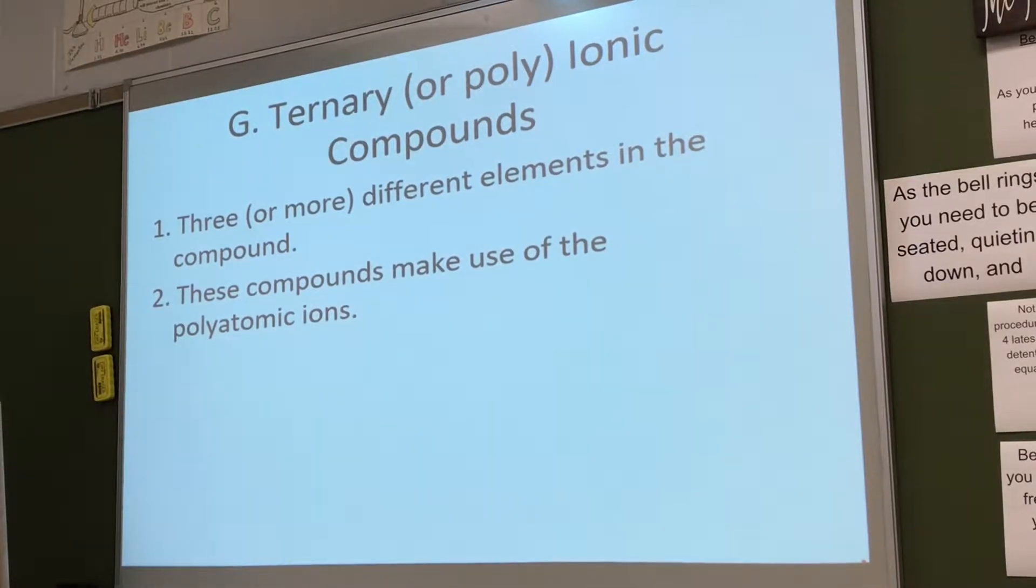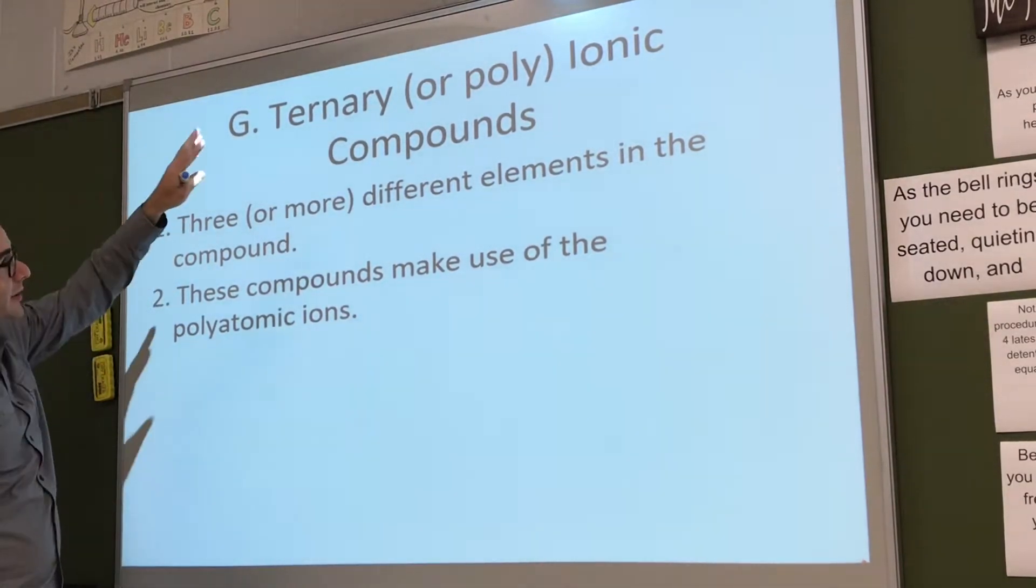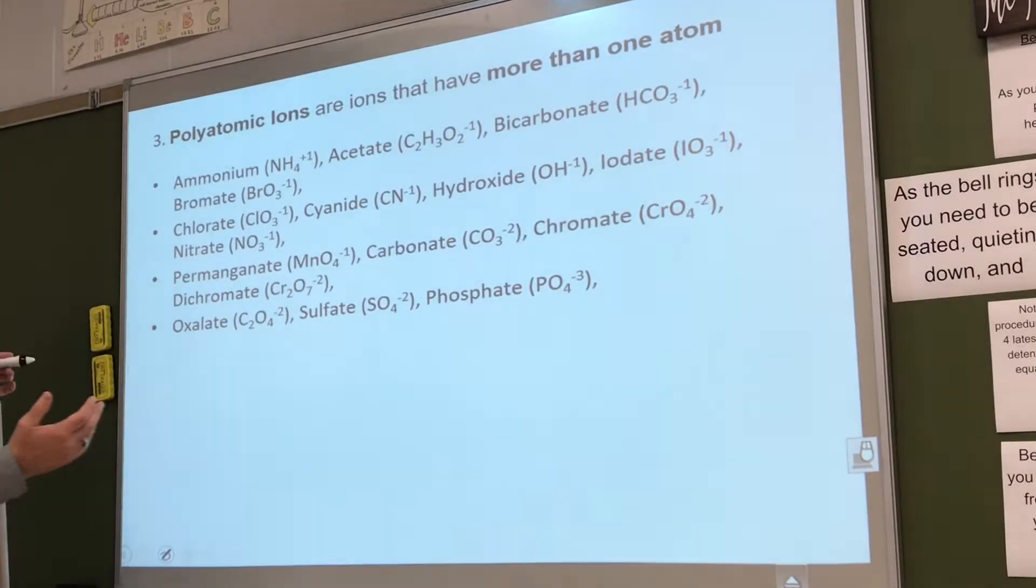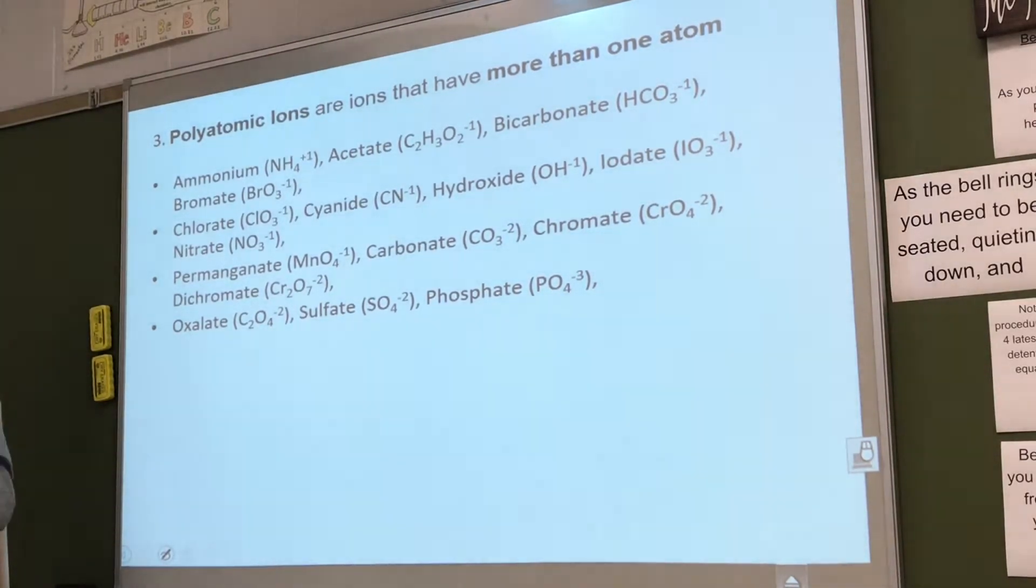Today we're going to go over the polyatomic ions. These polyatomic ions make things a little bit more interesting in this chapter. Polyatomic ions are basically when you have three or more different elements in one compound. You should have them memorized. These are all the basic ones. At this point you really should know what they are. If you got that quiz back last week and didn't get a couple right, really study this weekend. We have a quiz on Monday, and you need to know this stuff for what we're doing today.